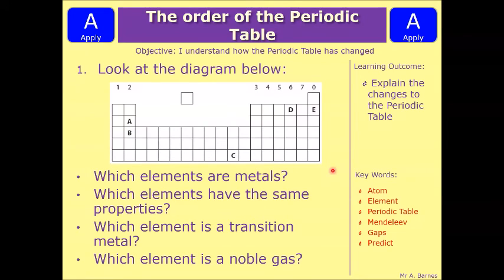Let's have a look at a question then. This one says look at the diagram below and it's asking you to say which elements are metals, which elements have the same properties, which element is a transition metal, and which element is a noble gas. So have a look through, think about what we've done during this video and see if you can answer it. Pause the video and have a go now.